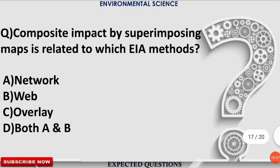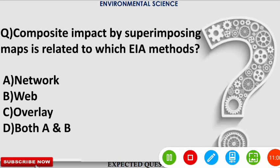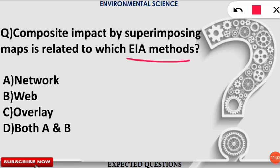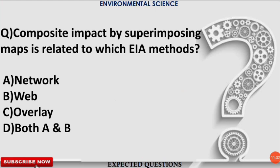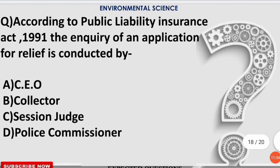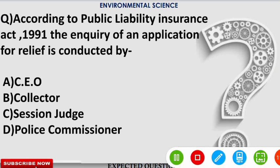The next question: composite impact by superimposing maps is related to which EIA method? The correct option is C — Overlay Analysis. In overlay analysis, one map (e.g., hydrological data) is superimposed on another map (e.g., forest data), allowing analysts to assess combined impacts by placing one map over another.